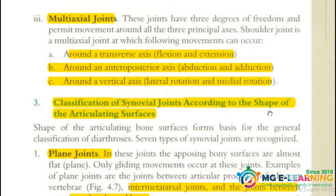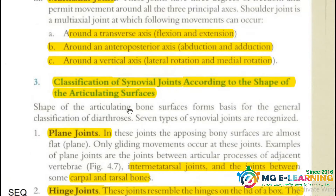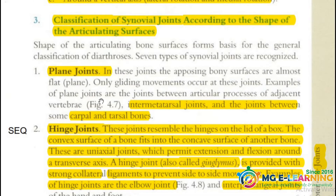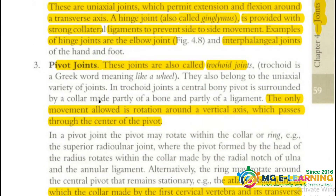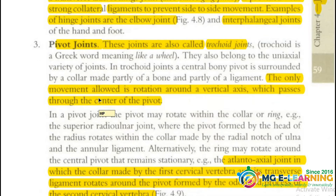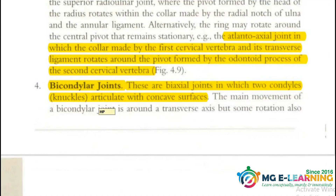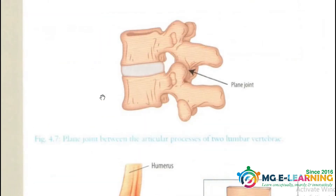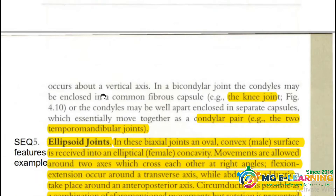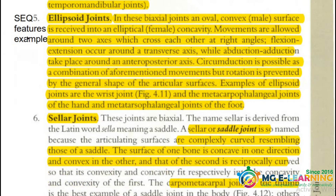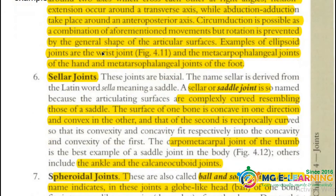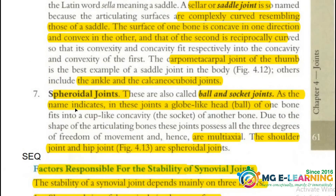Next is classification according to the shape of articulating surfaces. This is very important. You have to know all the classification points, the definitions, and the examples of all the synovial joints. Ellipsoid joints can appear as an individual question. Condylar joints are also important, and saddle and spheroidal joints are all important for your classification.